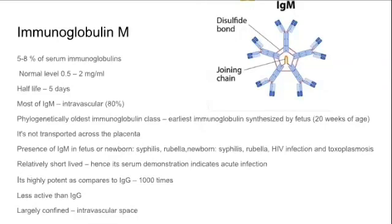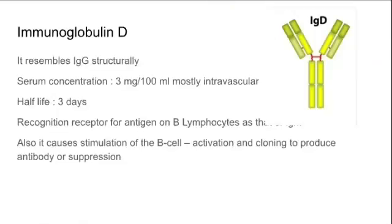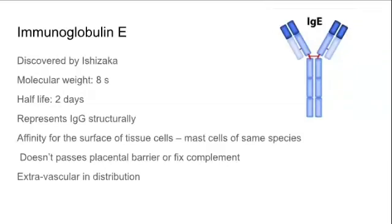IgD resembles IgG structurally. Its concentration is 3 mg per 100 ml, it is mostly intravascular, has a half-life of 3 days, and it stimulates B cell activation.